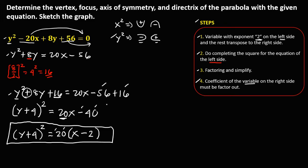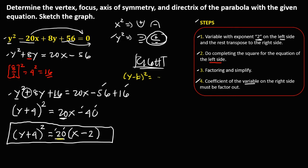From this standard equation, since the coefficient is positive 20, this parabola opens to the right. The standard form is (y − k)² = 4p(x − h). So from our equation, k corresponds to positive 4 and h corresponds to the x-shift, identifying the values of h and k.